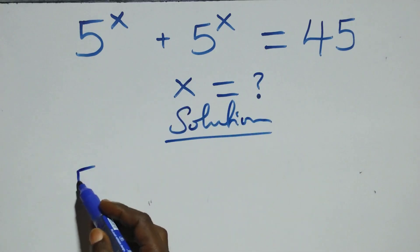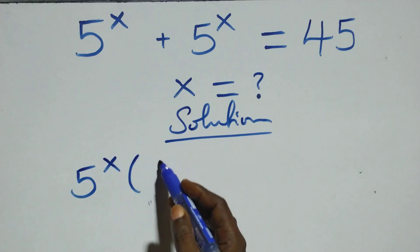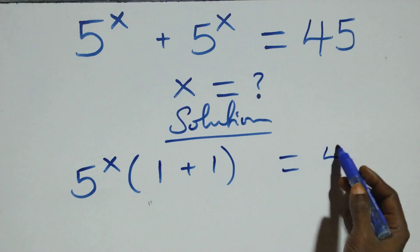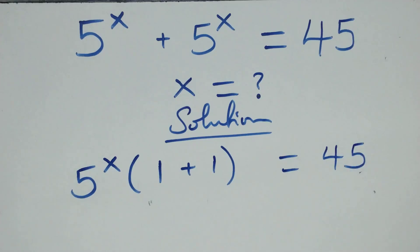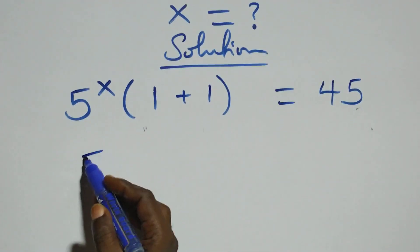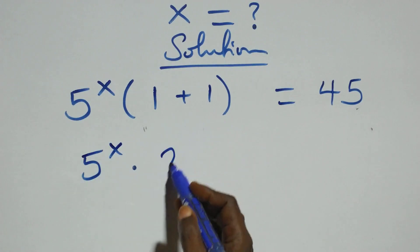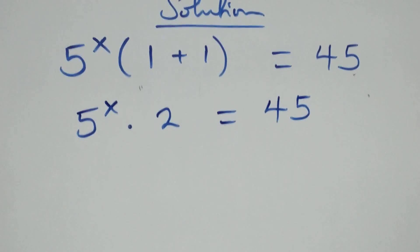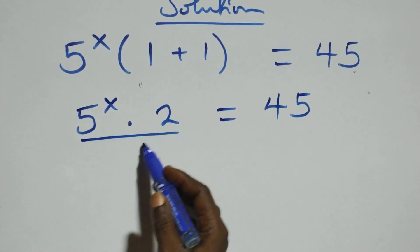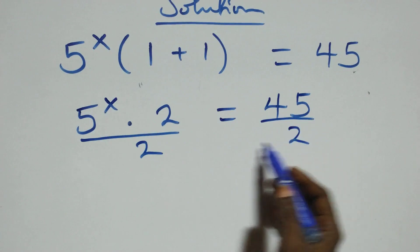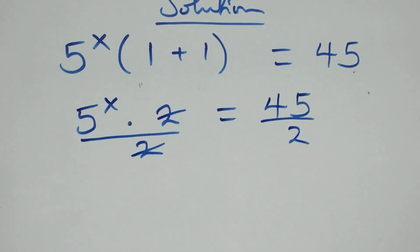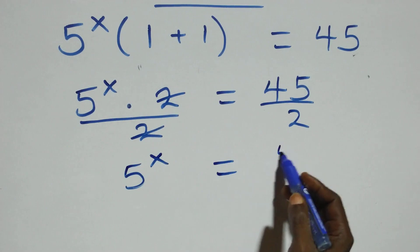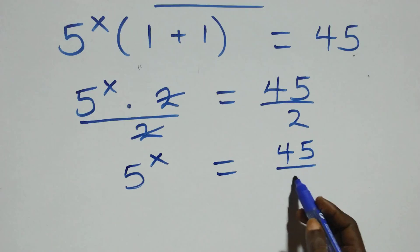From what we have here, we factor 5 raised to power x out, giving us 5 raised to power x into brackets 1 plus 1, which equals 45 on this side. Then 5 raised to power x times 2 equals 45. We divide both sides by 2, so the 2 cancels and we have 5 raised to power x equals 45 over 2.